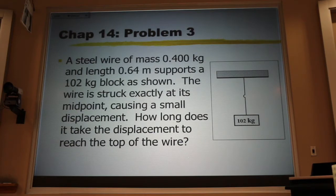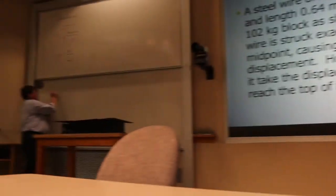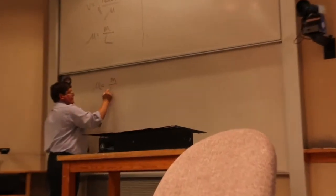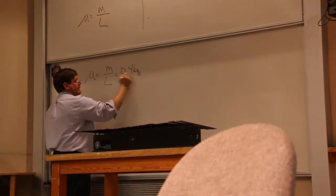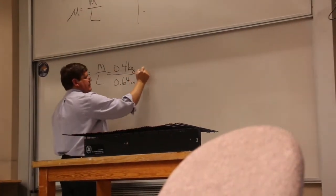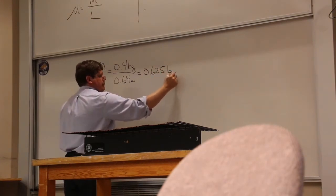Now, if we knew how fast it was going, this would be an easy problem to solve. Well, we can find out how fast it's going by calculating the mass density. That's the mass over the length. The mass, we're told, is 0.4 kilograms. The length is 0.64 meters, and that's going to give me 0.625 kilograms per meter.